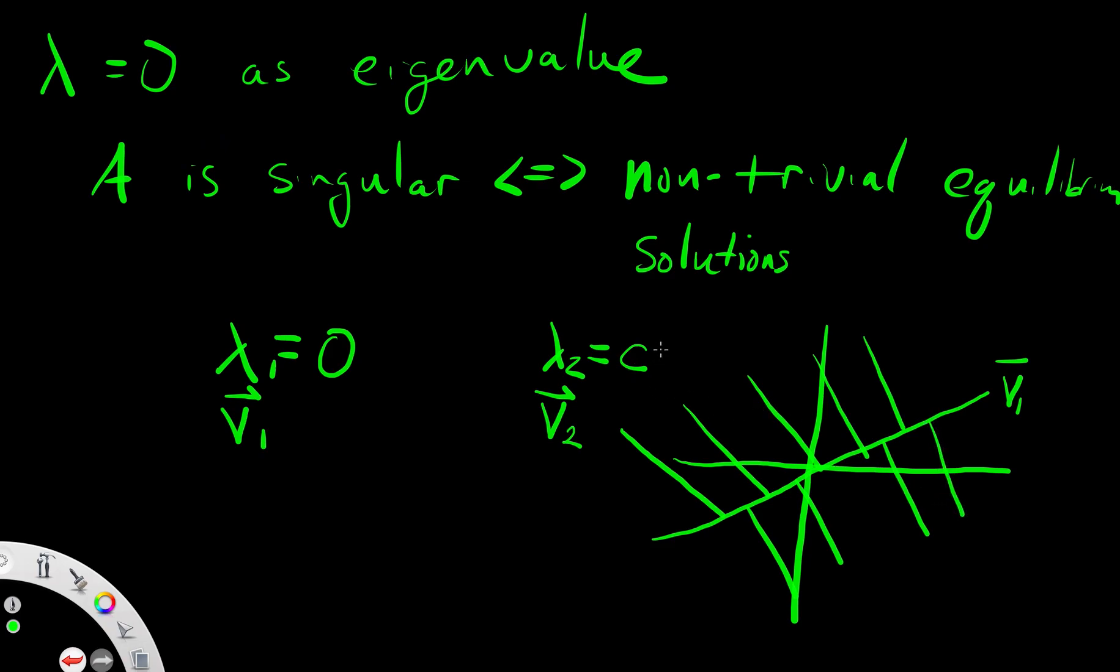If lambda 2 is positive, they are going to move away from the equilibrium solution. If lambda 2 is negative, they will go towards. And the slopes on these other lines that I have drawn here will have slope equal to the vector V2. We'll do an example of these shortly.